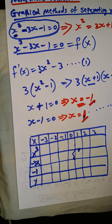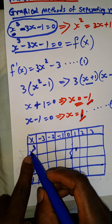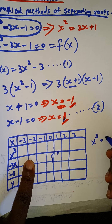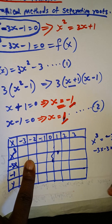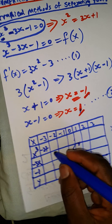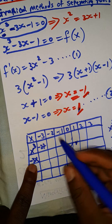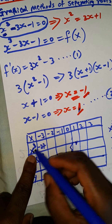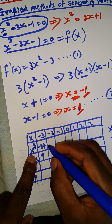Now we compute the values. For the x cubed column: when x is minus 3, that is minus 3 times minus 3 times minus 3, which is minus 27. When x is minus 2, that is minus 2 times minus 2 times minus 2, which is minus 8.